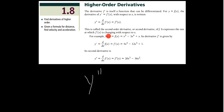The second derivative expresses the rate at which f prime of x is changing with respect to x. The derivative of a function is the rate of change; the second derivative is the change of the rate of change. So if we have y = f(x) = x⁵ − 3x⁴ + x, the first derivative is 5x⁴ − 12x³ + 1. The second derivative is simply taking that first derivative and taking the derivative of that.